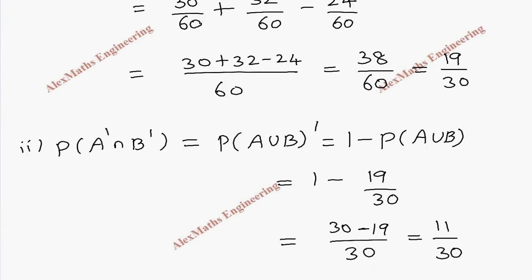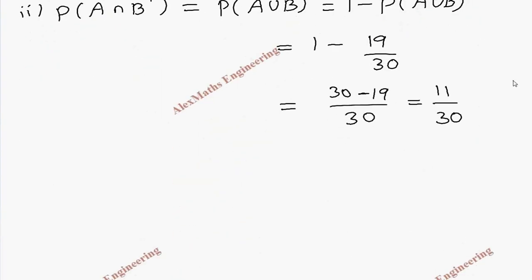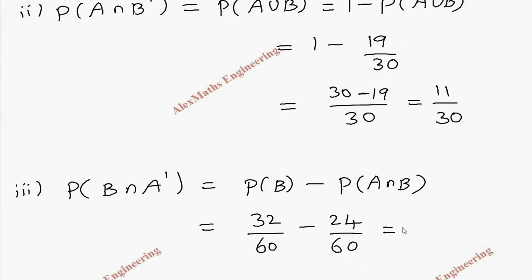Coming to the third subdivision: the student has opted NSS but not NCC. It means P of B but not A, so we write this as P of B intersection A prime. It is P of B, but there should not be A part, so for that we subtract the common A intersection B. By formula, this is 32 by 60 minus 24 by 60.